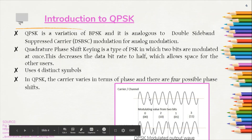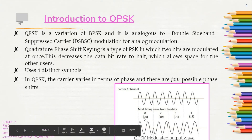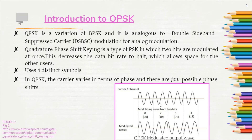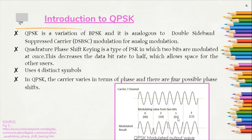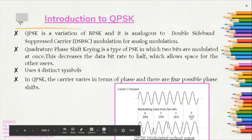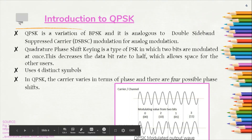Let us consider this carrier wave which is sinusoidal in nature. These are the modulating symbols which are made up of two bits. Here we can see that symbol 00 is not modulating the phase of the carrier, while symbol 10 is modulating the phase of the carrier and shifting it by 180 degrees. Similarly, symbols 01 and 11 are shifting the phase of the carrier by 90 degrees and 270 degrees. So for this bit stream, the final QPSK modulated output wave looks like this.